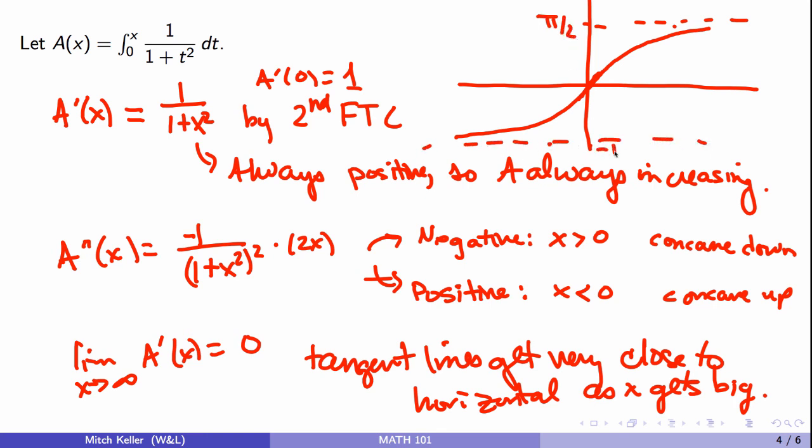It has one up here at pi over 2, and another one down here at minus pi over 2, which you might be willing to conjecture if you sit down and work out some of the Riemann sums to start estimating A of 10 and A of 11 and A of 12. You'll start getting close to pi over 2, for example, but the rate at which things are increasing will slow down dramatically very soon thereafter.